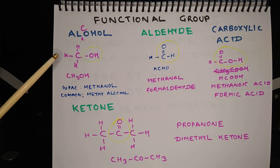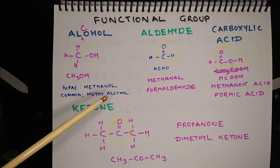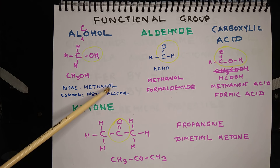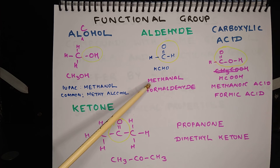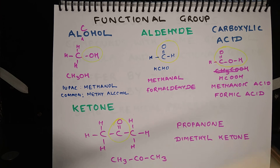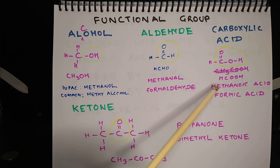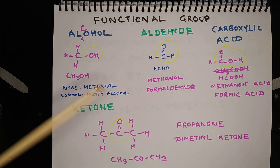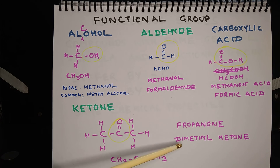So the compound CH3OH, that is methyl alcohol as the common name, has the IUPAC name methanol — the -ol suffix has been added. In the case of HCHO, the IUPAC name is methanal and the common name is formaldehyde. In the case of HCOOH, the IUPAC name is methanoic acid and the common name is formic acid. In this case, the IUPAC name is propanone and the common name is dimethyl ketone.